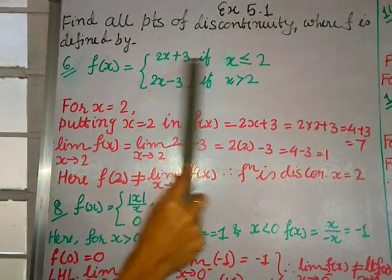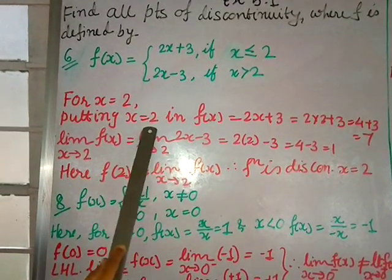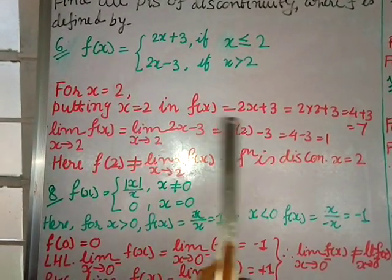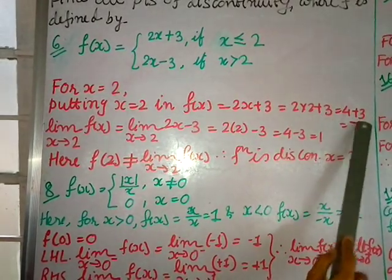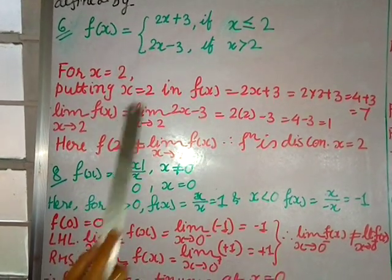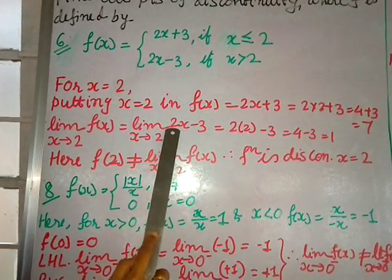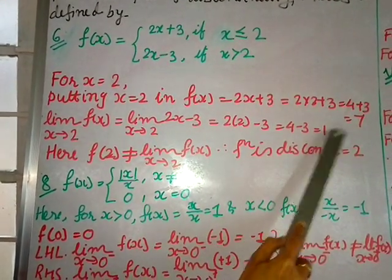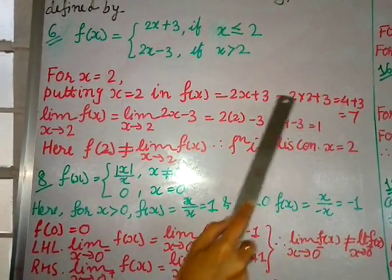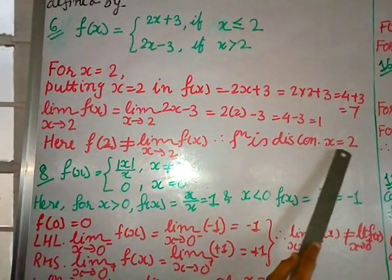For x = 2, I put x = 2 in the first function: f(x) = 2x + 3, so 2×2 + 3 = 7. For the limit, I use the second function: lim(x→2) of 2x − 3 = 2×2 − 3 = 1. Since f(2) = 7 ≠ 1 = lim(x→2) f(x), the function is discontinuous at x = 2.